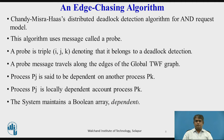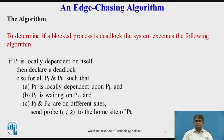The system maintains a boolean array 'dependent' for each process PI. Initially, dependent[I][J] is false for all I and J. To determine if a blocked process PI is deadlocked: if PI is locally dependent on itself, declare a deadlock. Else, for all PJ and PK such that PI is locally dependent upon PJ, and PJ is waiting on PK, and PK and PJ are on different sites, send probe IJK to the home site of PK.